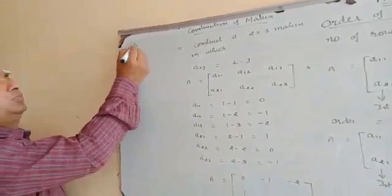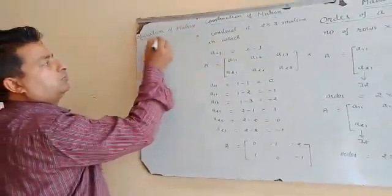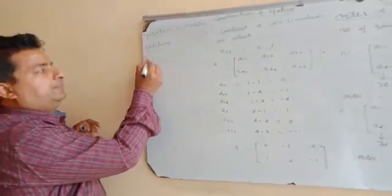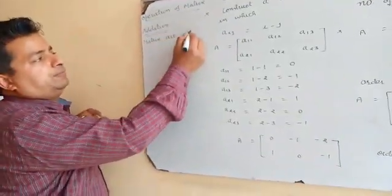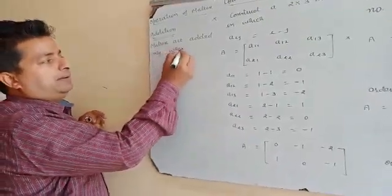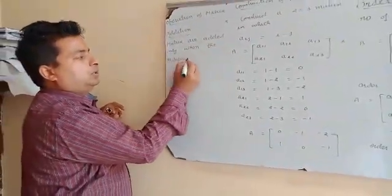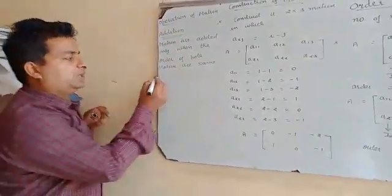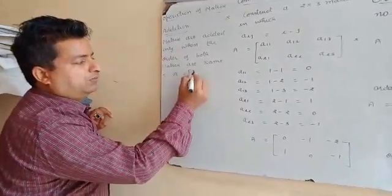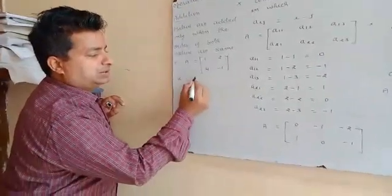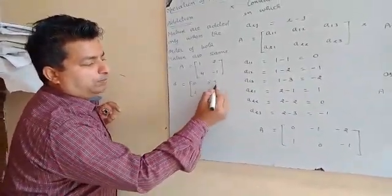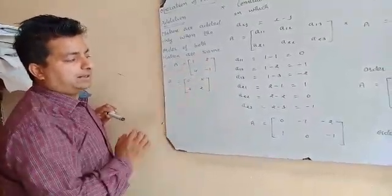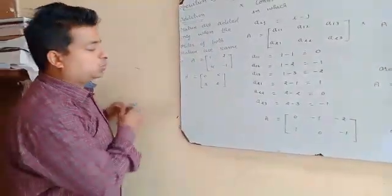Next, we discuss operations of a matrix. The first operation is addition. In this operation, matrices are added. Matrices can be added only when the order of both matrices are the same. For example, matrix A is [1, 2; 4, −1] and B is [0, 5; 3, 2]. The first matrix has an order of 2 by 2 and the second also has an order of 2 by 2, so the order of both matrices are the same.